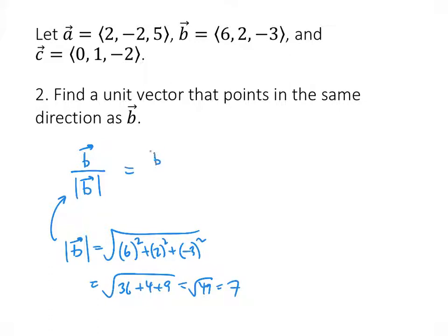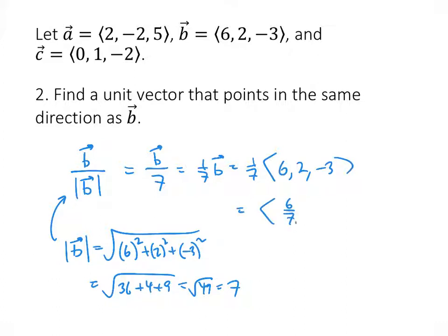So we want to take B and divide it by 7, which is the same as multiplying B by 1/7. So that's (1/7) times (6, 2, -3), which gives us (6/7, 2/7, -3/7).